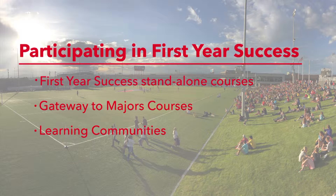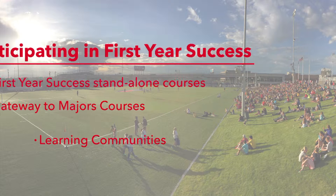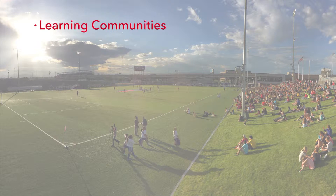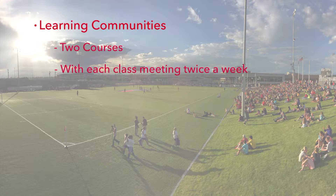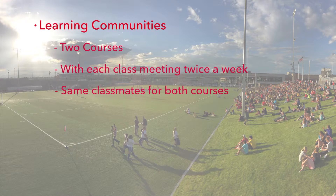Learning communities can either be traditional or year-long. Each option is separated on your first-year success course guide. A traditional learning community involves two courses usually housed in the student success building, with each class meeting twice a week. These courses are paired, meaning you will take both courses with the same cohort of classmates.